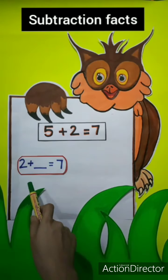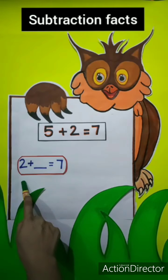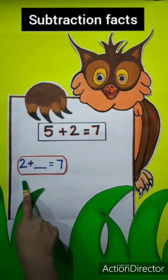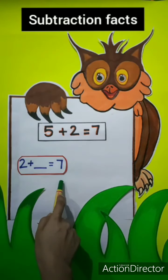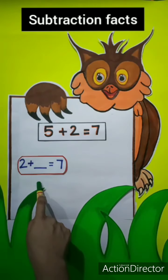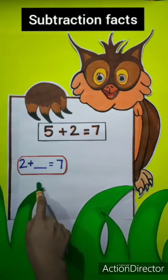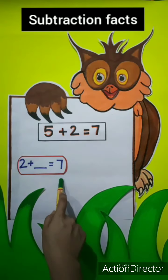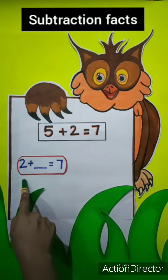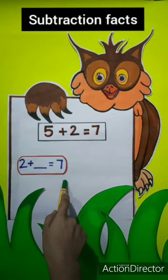So if only one addend, 2, and the sum is given, then how do we find the other addend? We have to subtract 2 from 7.